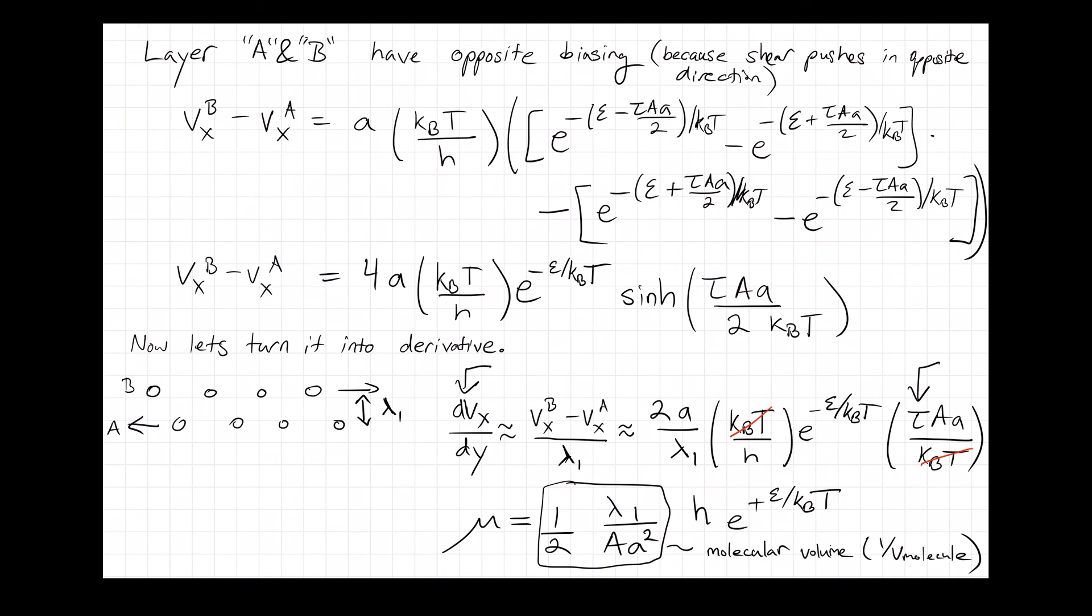And then times what's called the Arrhenius term that basically goes exponentially, positive exponentially, with energy barrier divided by k_b T.